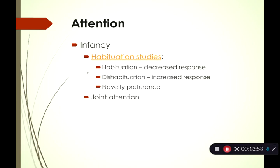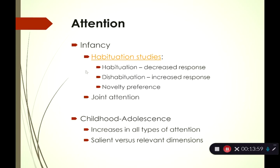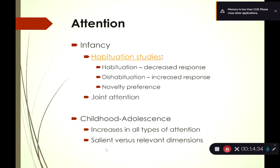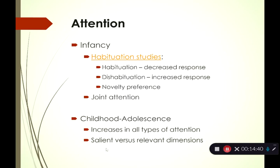Moving to childhood and adolescence: you see increases from age 3 to 20 in all types of attention — selective, divided, sustained, and executive — getting better every year. One interesting improvement is in distinguishing salient versus relevant dimensions. Children at school often have trouble figuring out what's important to pay attention to. A kid doing jumping jacks might grab their attention instead of the teacher's instructions — they pay attention to what's salient rather than what's relevant.